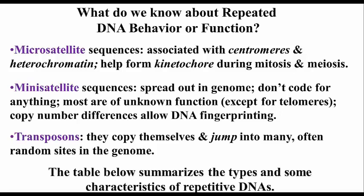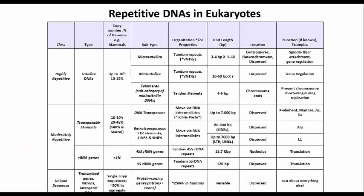Here's a table that summarizes the types and some characteristics of repetitive DNAs. Please look at it — you can compare transposable elements, ribosomal RNA genes, transcribed genes, the introns of genes, the DNA between genes, and satellite DNAs. The table shows which categories of DNA are highly repetitive, moderately repetitive, or more or less unique. It gives examples and tells you some functions where we know them.